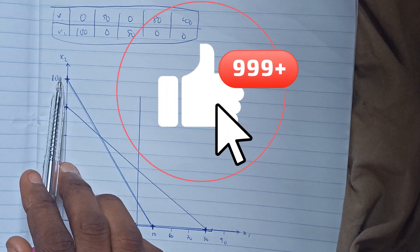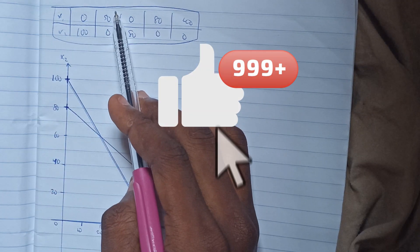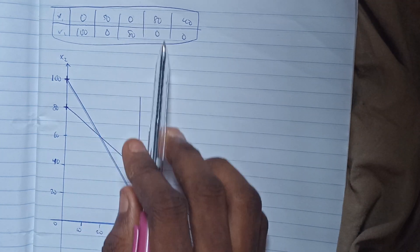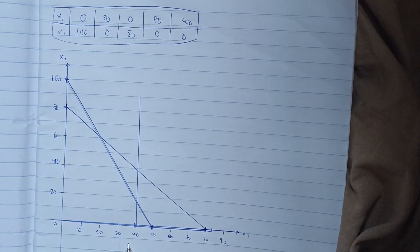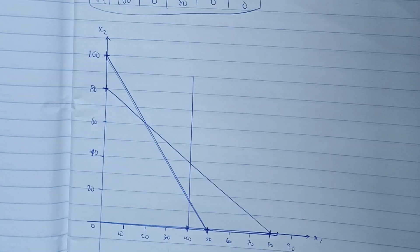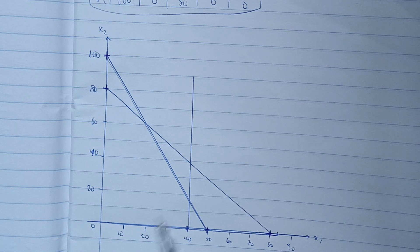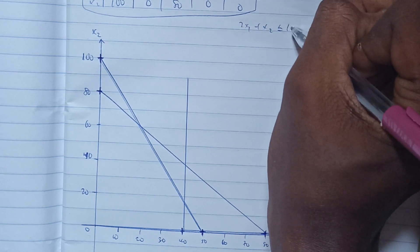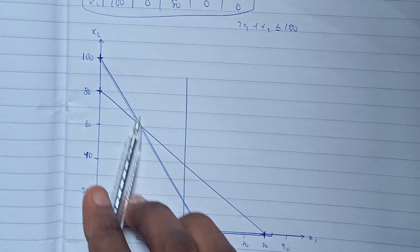So on the graph: the line through (0, 100) and (50, 0) represents equation one; the line through (0, 80) and (80, 0) is equation two; and the vertical line at x1 equals 40 is equation three. Now we need to determine the feasible — or visible — region: the part of the graph that satisfies each and every equation simultaneously.